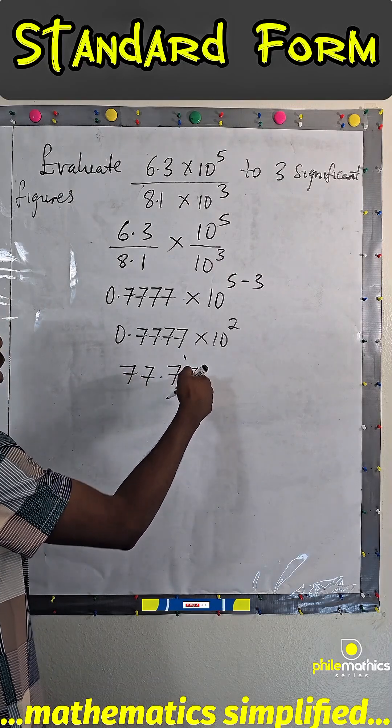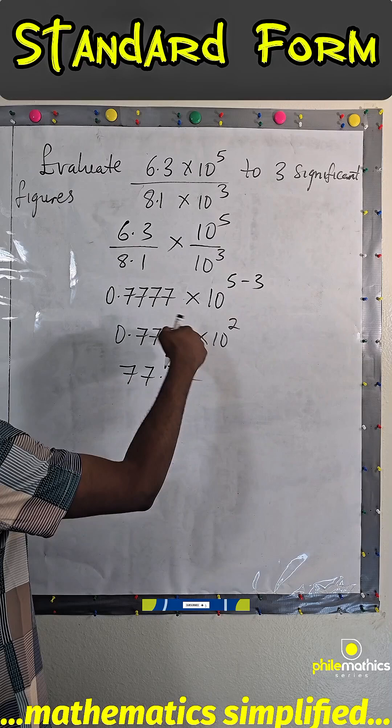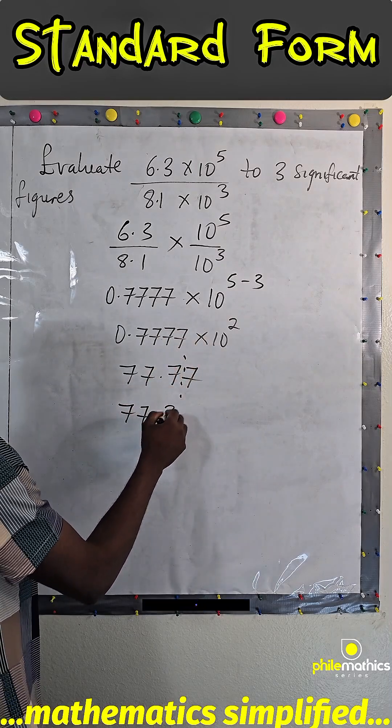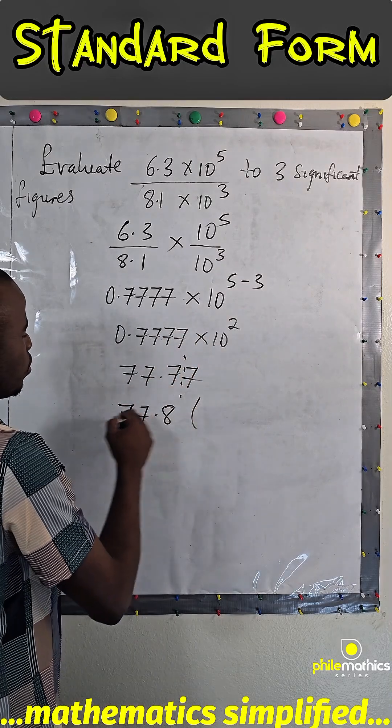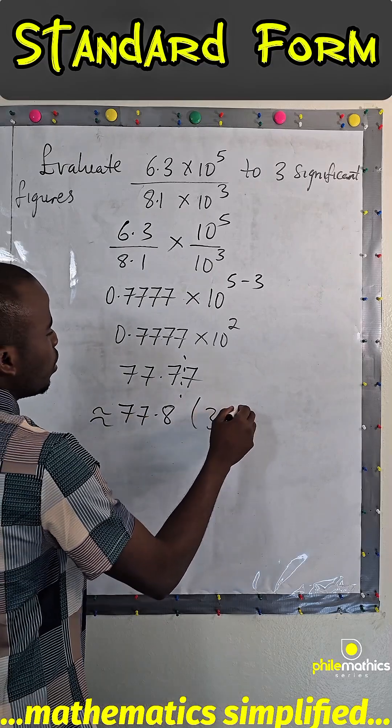So since this is about 5, to round up and add it here, we have 77.8 approximately to 3 significant figures.